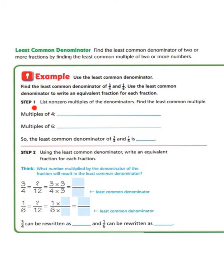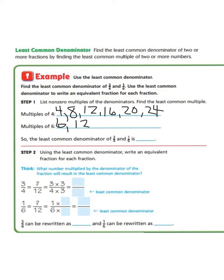Step one: list the non-zero multiples of the denominators to find the least common multiple. The multiples of four are: 4, 8, 12, 16, 20, 24. We stop there and check against the multiples of six: 6, 12 — and we can already stop, because we see a common multiple of 12. Since 12 is the first number in common between four and six, it's the least common multiple. So the least common denominator of three-fourths and one-sixth is 12.